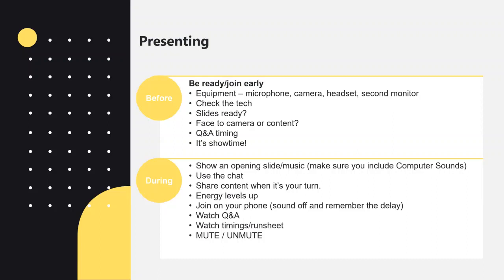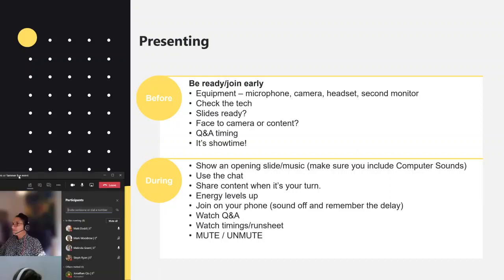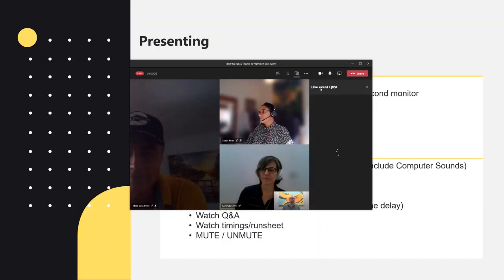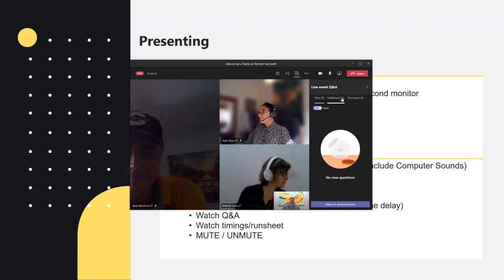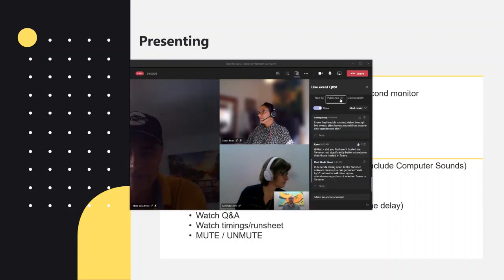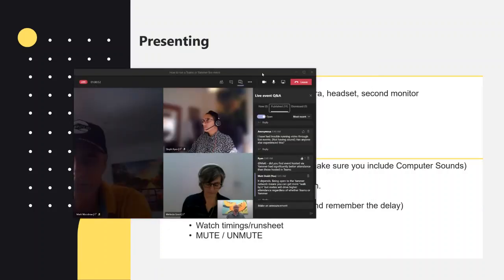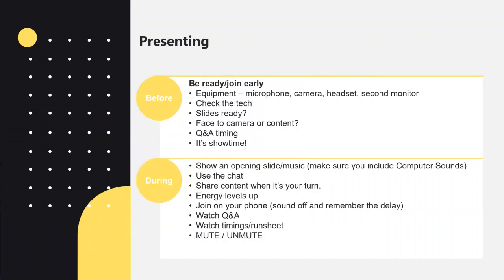The difference for a Yammer event from the presenter side is that instead of the Teams Q&A panel, you have a Yammer conversation thread window. In Teams Live you can moderate questions — choosing whether to publish them — whereas in Yammer that moderation control isn't available in the same way. Everything else is very similar.